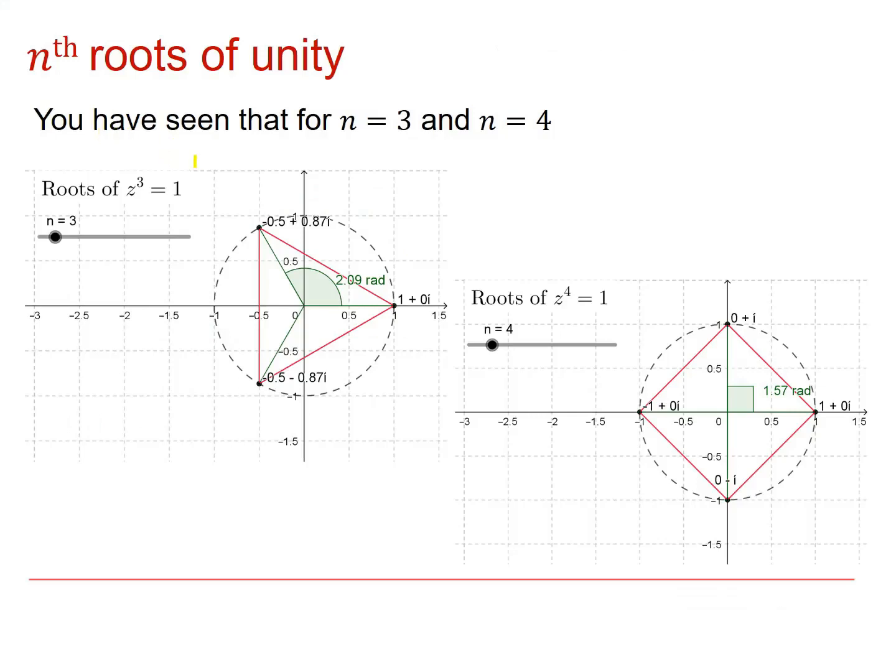You've seen that when n equals 3 and when n equals 4, the roots of z cubed equals 1 give you 3 roots spaced evenly around a circle. And when n equals 4, you get 4 roots spaced evenly around the same circle radius 1.